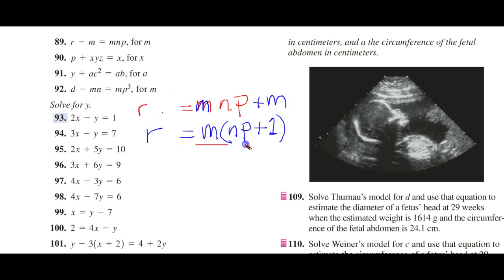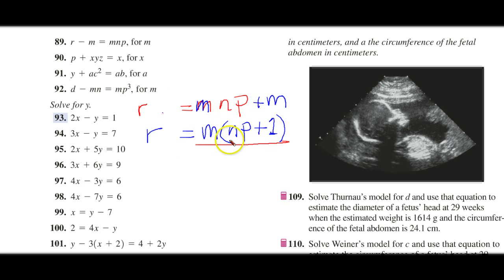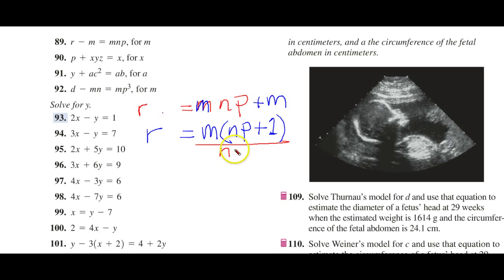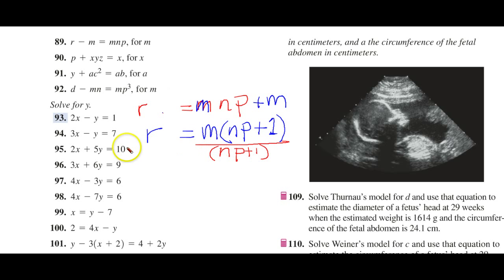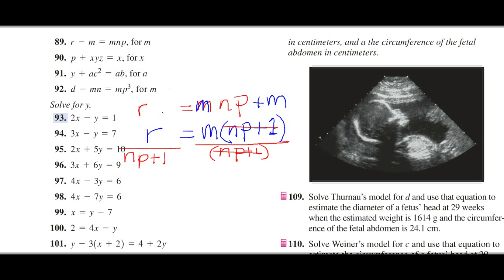Because now, we want to get M by itself. So, we divide by this, NP plus one. And we could put it in parentheses or not. So, these just cancel out now. And M equals that. Okay. Now, notice 90 is pretty much the same. So, we won't do that one.